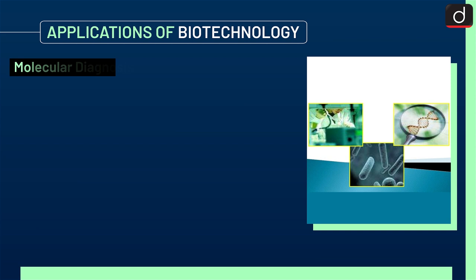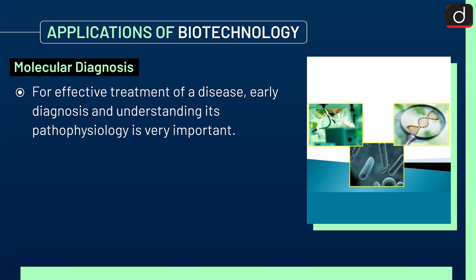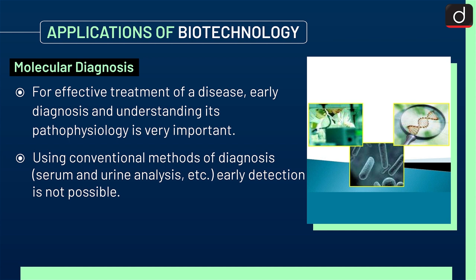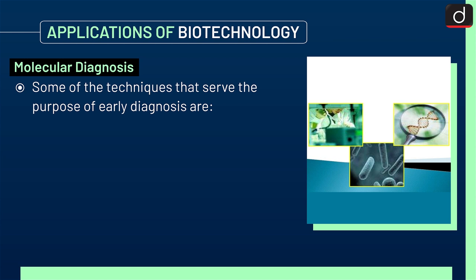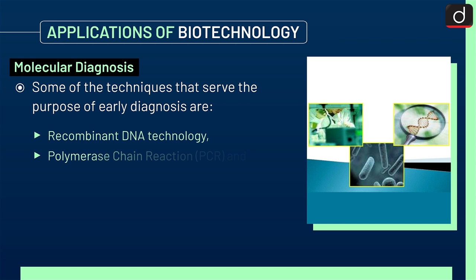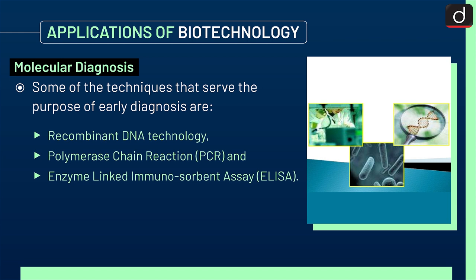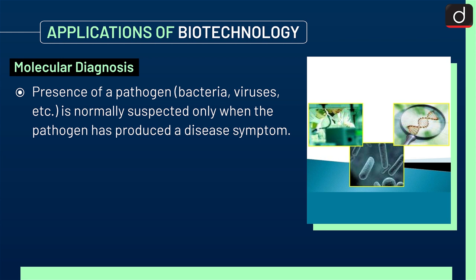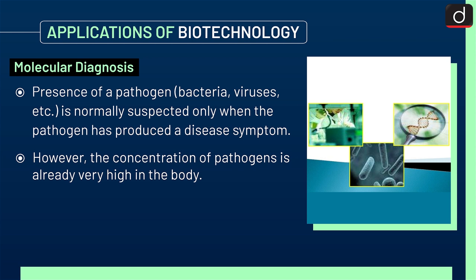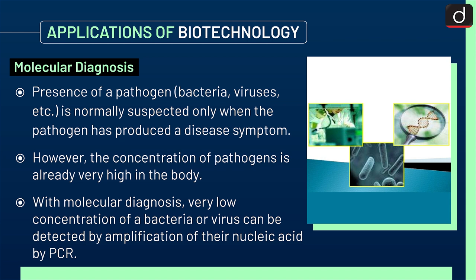Next is molecular diagnosis. For effective treatment of a disease, early diagnosis and understanding its pathophysiology is very important. Using conventional methods of diagnosis such as serum and urine analysis, early detection is not possible. Some of the techniques that serve the purpose of early diagnosis are recombinant DNA technology, polymerase chain reaction (PCR), and ELISA, i.e. enzyme-linked immunosorbent assay. Presence of a pathogen — bacteria, viruses, etc. — is normally suspected only when the pathogen has produced a disease symptom. However, the concentration of pathogens is already very high in the body. With molecular diagnosis, very low concentration of a bacteria or virus can be detected by amplification of their nucleic acid by PCR.